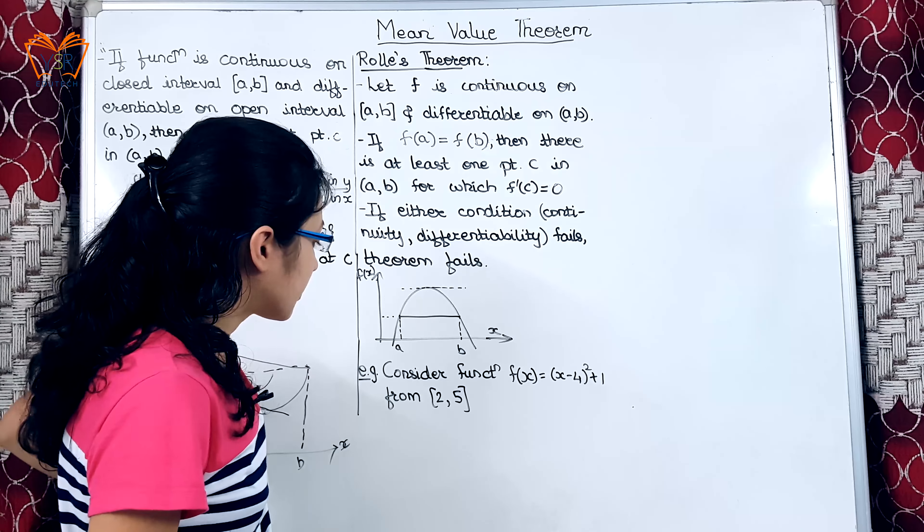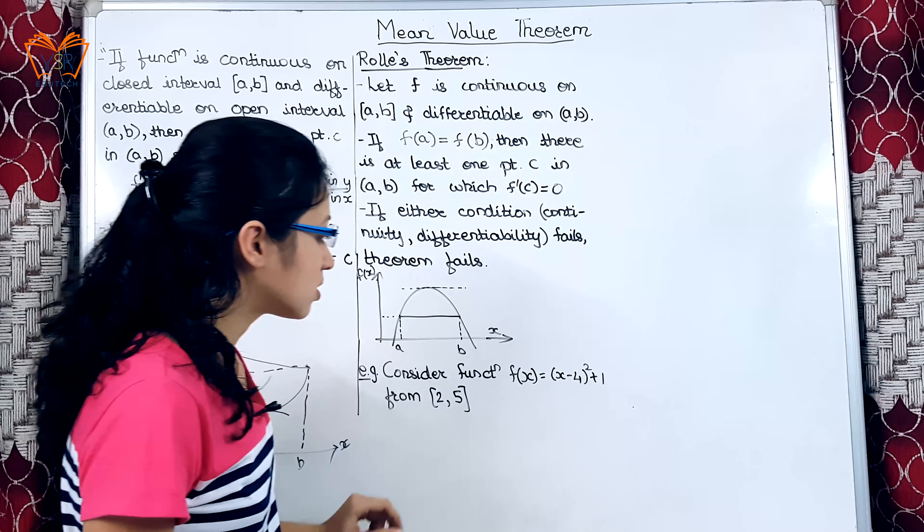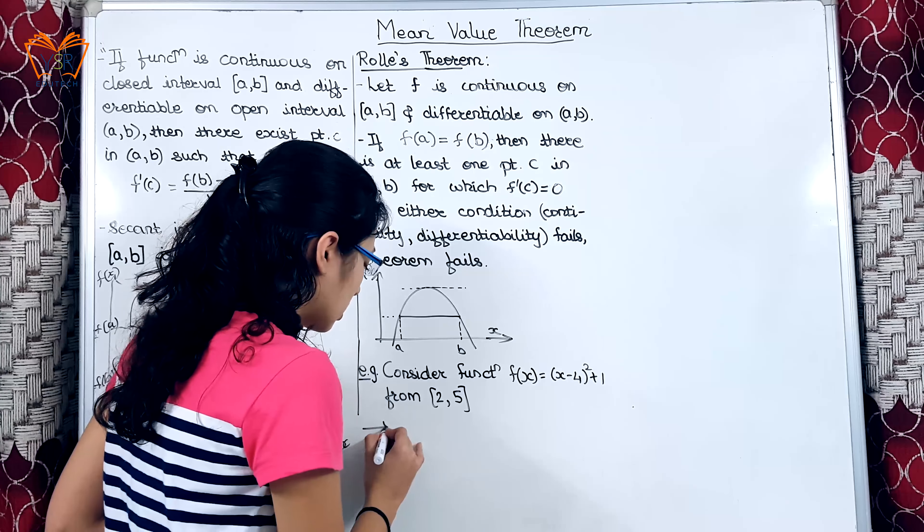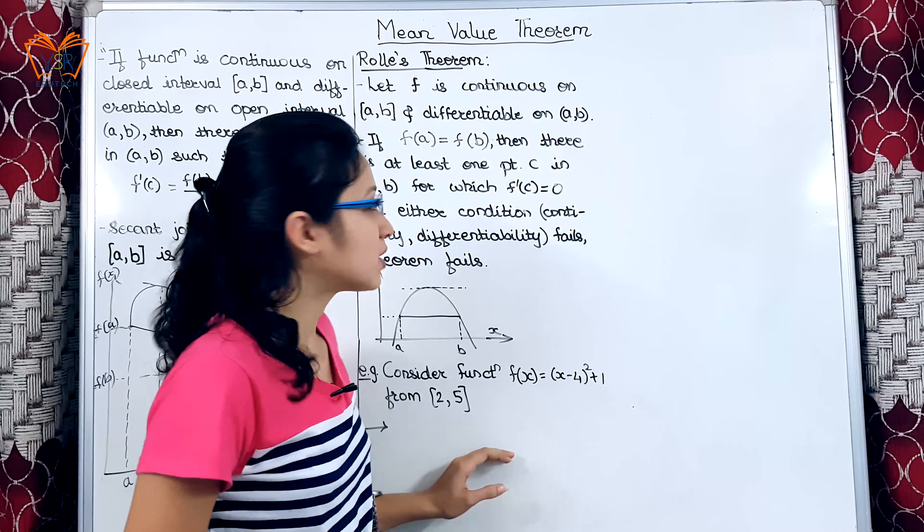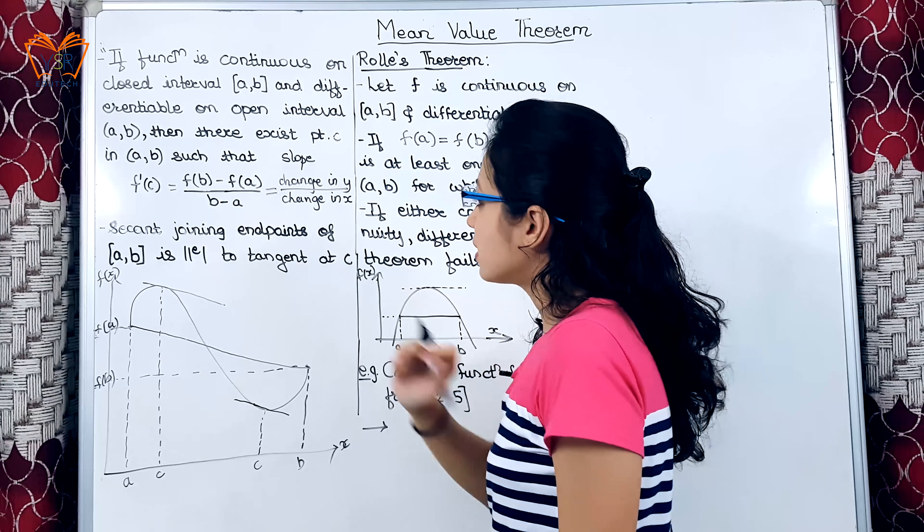Moving on to the example, consider function f(x) is equal to (x-4)² + 1 from points 2 to 4. Now, we are going to apply mean value theorem here. For mean value theorem, we need values f(a) and f(b).